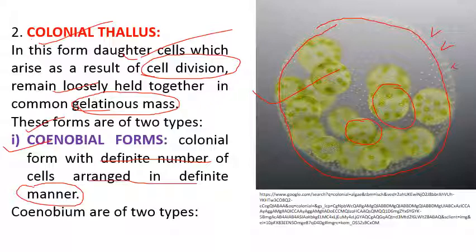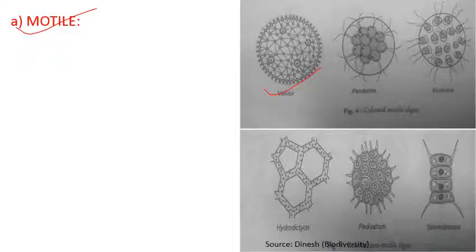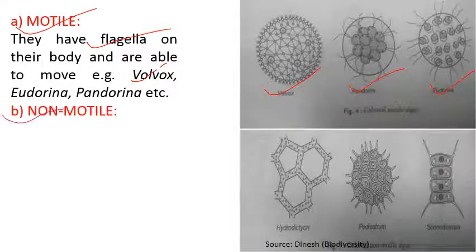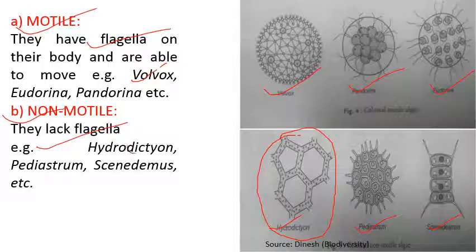Motile colony has flagella on each cell and is able to move — examples are Volvox, Pandorina, and Eudorina. Non-motile colonies lack flagella — the best example is Hydrodictyon, also known as water net. Other examples of non-motile colonies are Pediastrum and Scenedesmus.